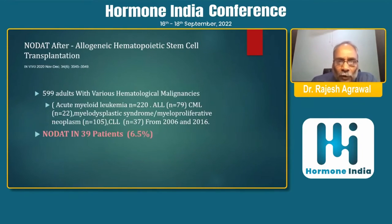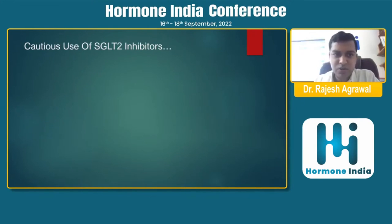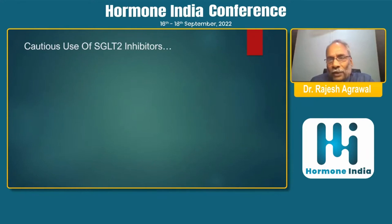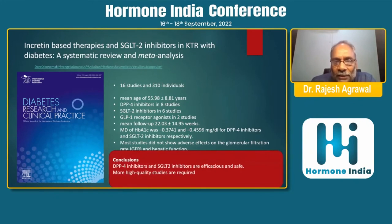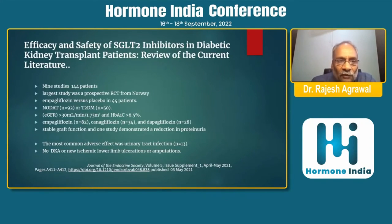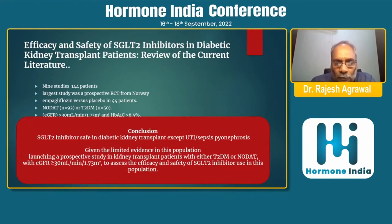NODAT after kidney transplant with calcineurin inhibitors is about 20%, developing within the first three to six months. After lung transplant, data from the organ procurement transplant network on over 3,500 single or double lung transplants shows NODAT incidence of 33.4%, with risk factors of age, BMI, and hepatitis C. After allogeneic hematopoietic stem cell transplantation (bone marrow transplant), incidence is 6.5% in 600 adults with various hematological conditions. Regarding SGLT2 inhibitors, multiple literature reviews and meta-analyses across several studies found them to be safe in the short term, but large long-term randomized controlled studies are still required.